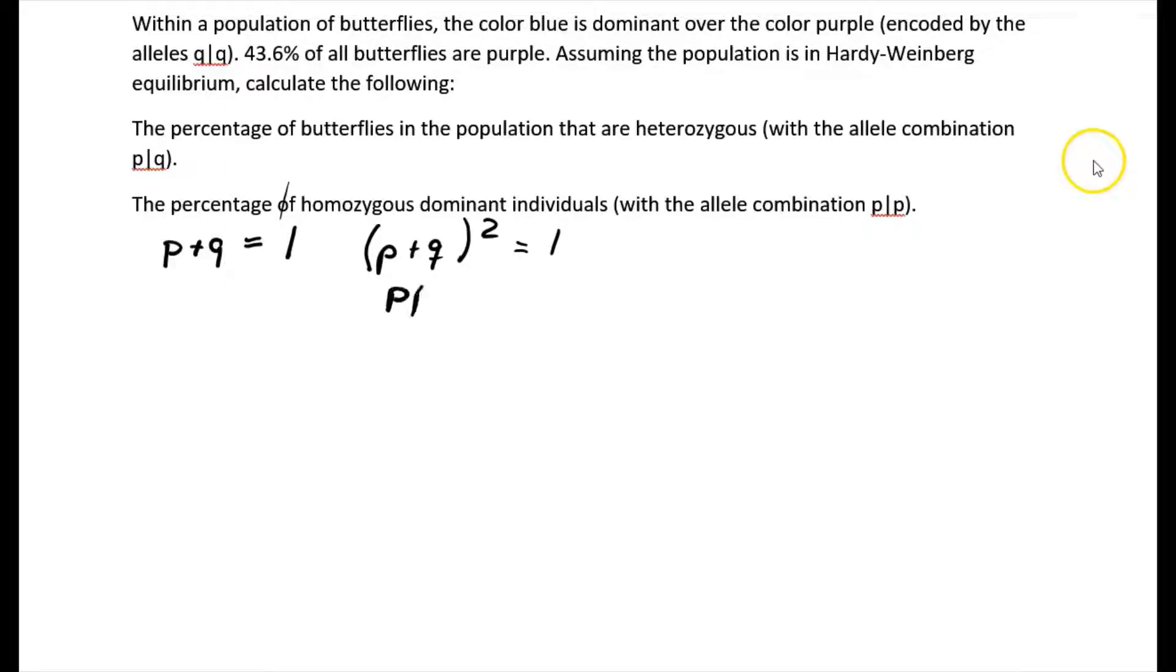That would give us P squared plus 2 times PQ plus Q squared. That gives us Q squared, which would be QQ indicated above. So that is the equation that we have.